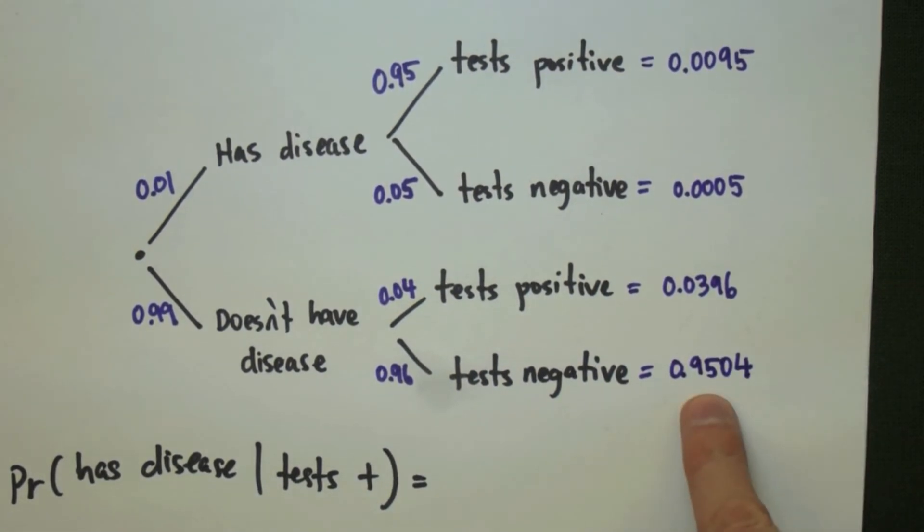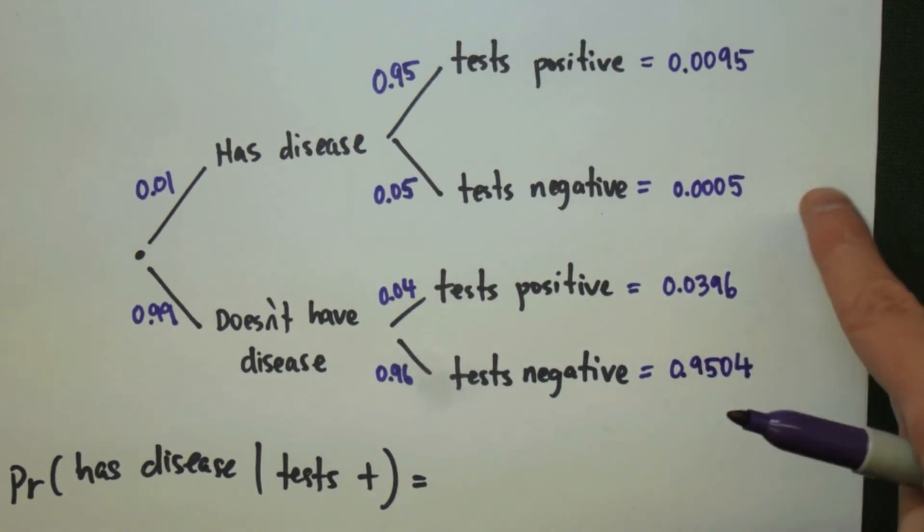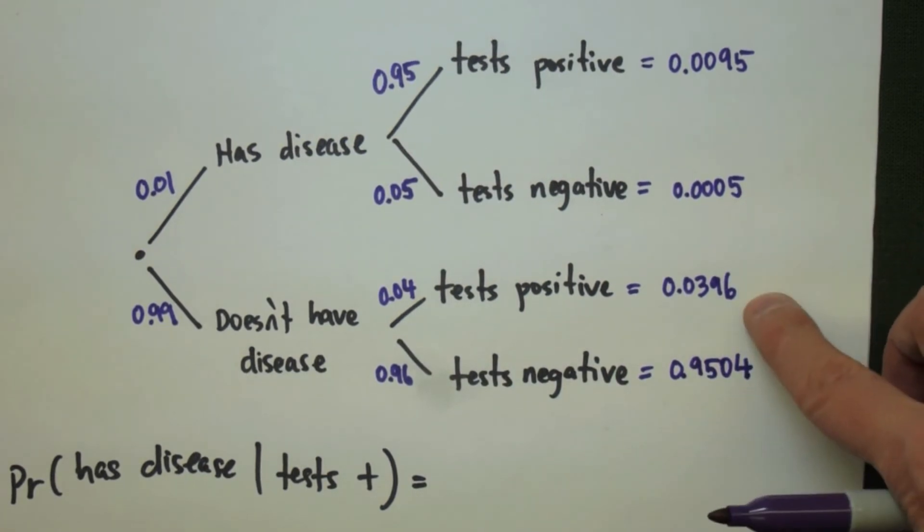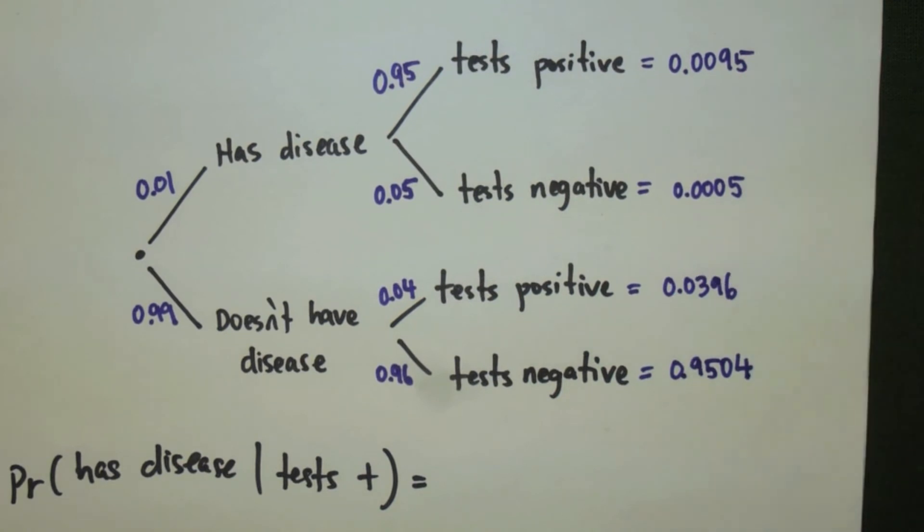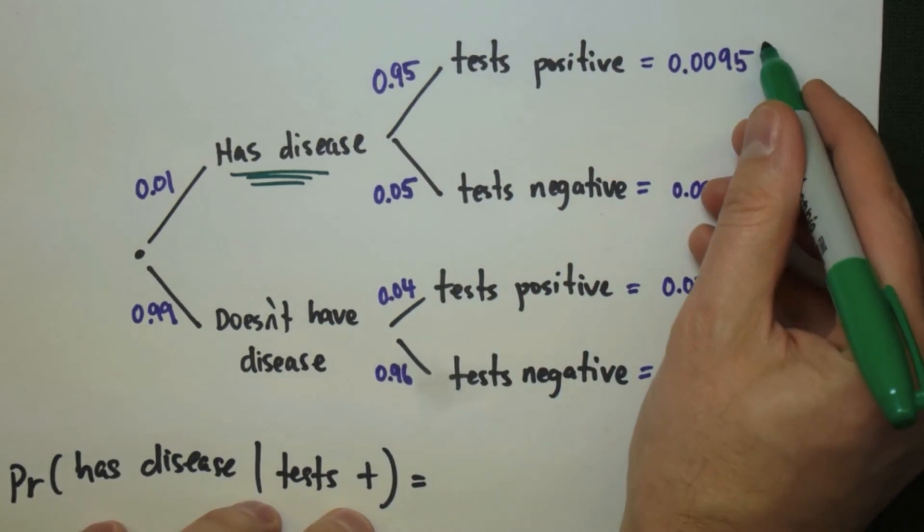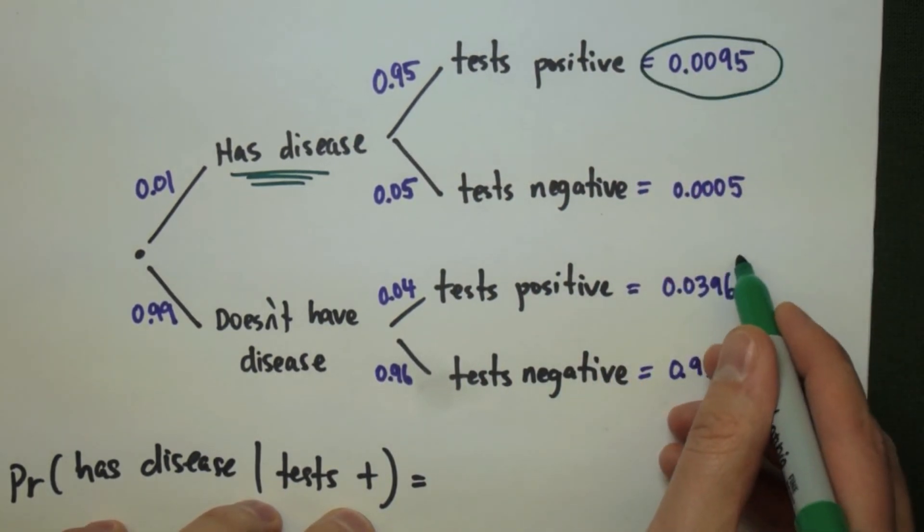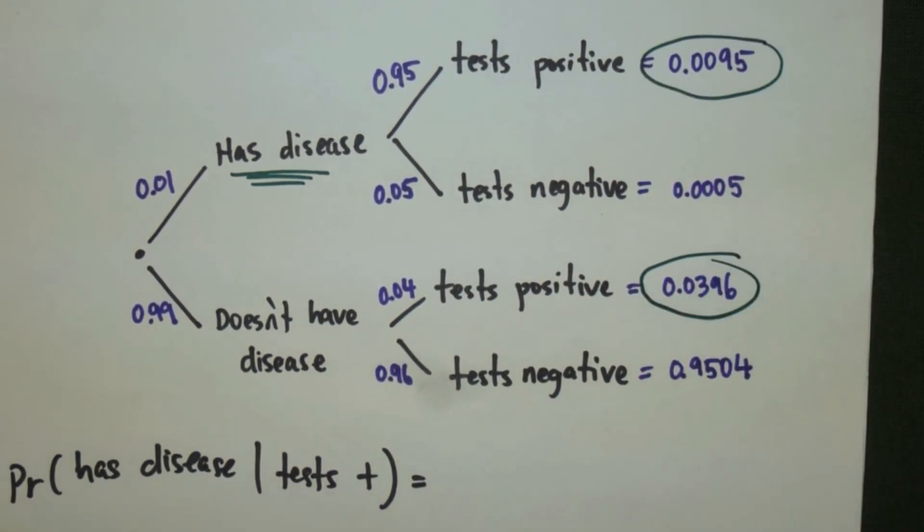You'll notice that most of the population fits in that doesn't have disease and test negative. 95% of everybody isn't there. All the other populations are much smaller. We'll talk a little bit more about this in a second. So we're looking for has the disease and we want to only look at the ones where we test positive, which are these two here. So those two branches create our sample space and out of those two branches only the one where they actually have the disease becomes the numerator.